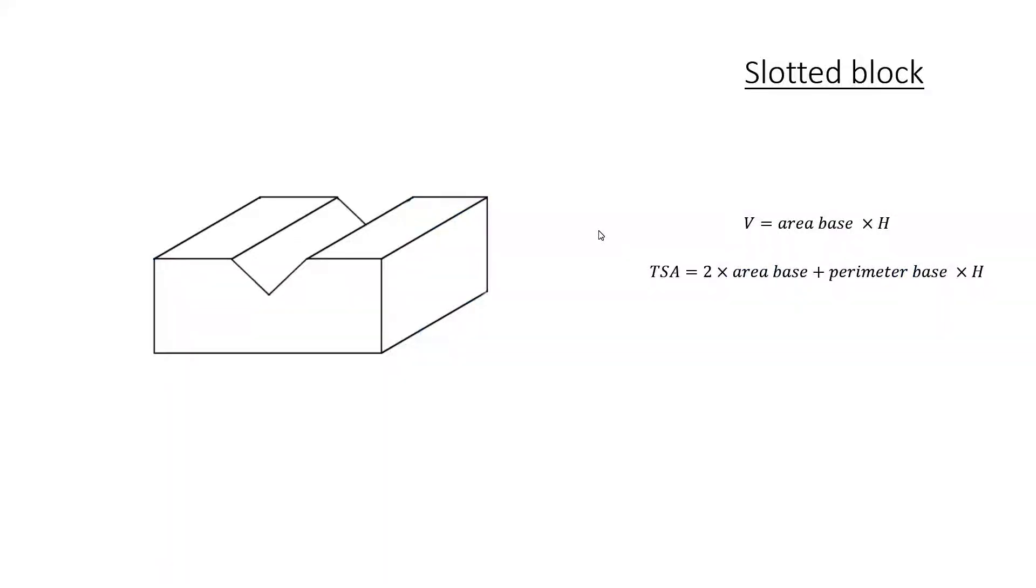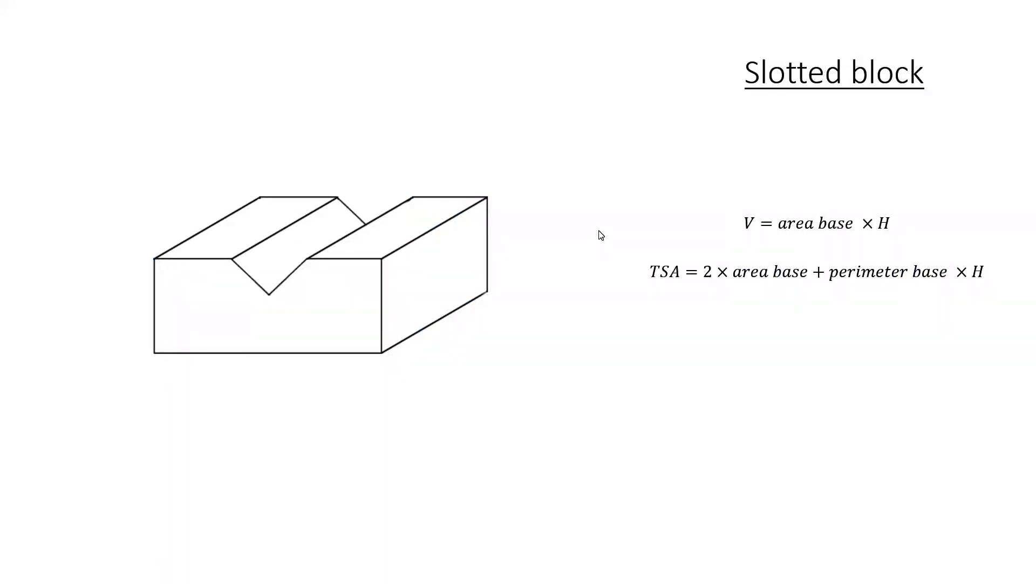The first one we're going to look at is a slotted block. As you can see, this block has had a V-shaped channel cut into it. I'm still going to use my simple volume formula: volume equals area of base times height. My total surface area formula would be two times area of base plus perimeter of base times height. Now, the question is, what is actually going to be my base?